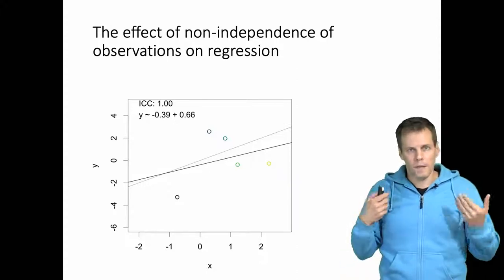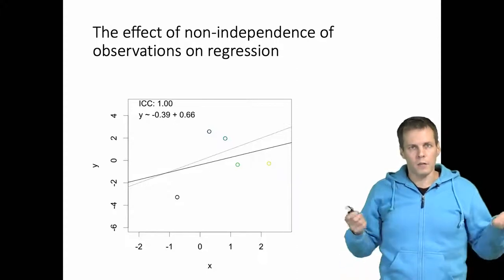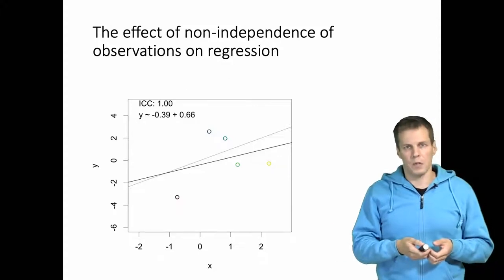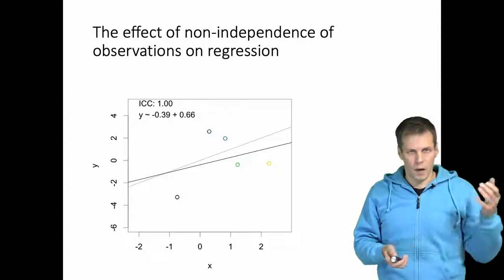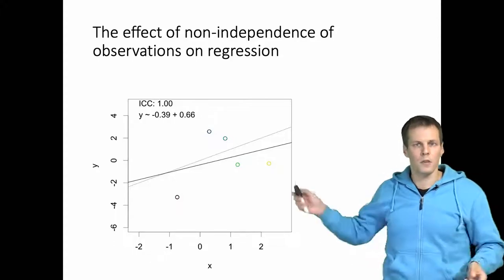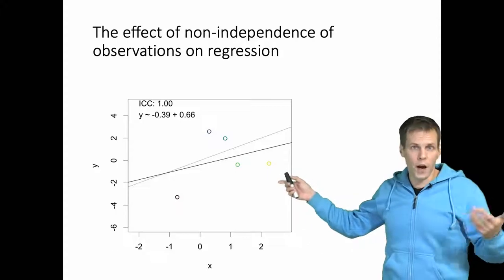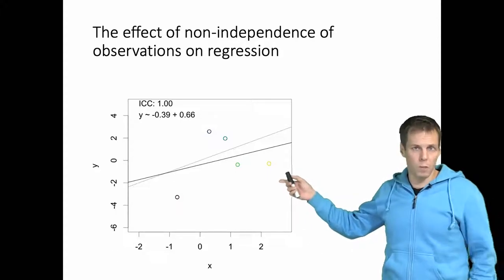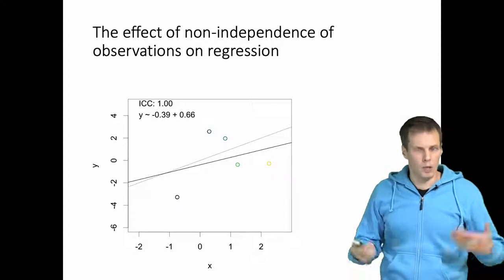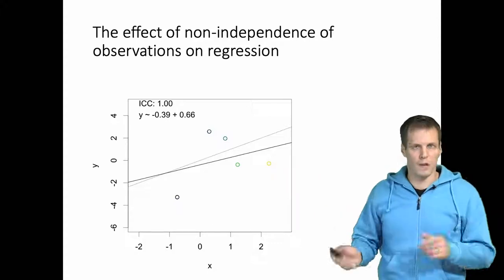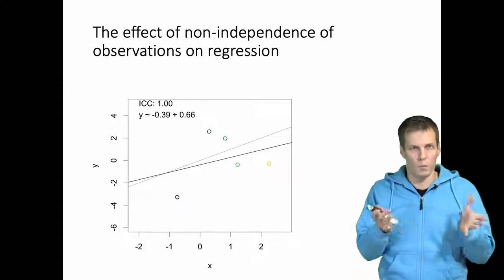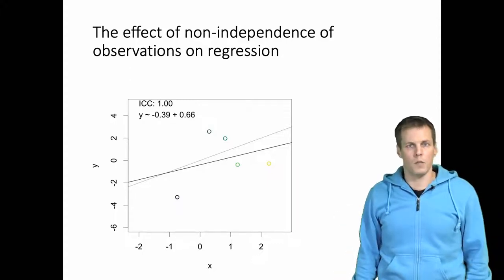In effect, intraclass correlation decreases our effective sample size. If we have 100 observations that are strongly clustered, it's possible that we actually have only five observations' worth of information. In less extreme cases, we could have 100 observations that actually provide information worth only about 20 observations.